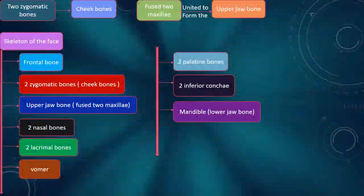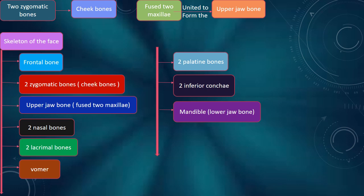The skeleton of the face includes: frontal bone, two zygomatic bones (cheek bones), upper jaw bone (fused two maxillae united to form the upper jaw bone), two nasal bones, two lacrimal bones, vomer, two palatine bones, two inferior conchae, and the mandible (lower jaw bone).